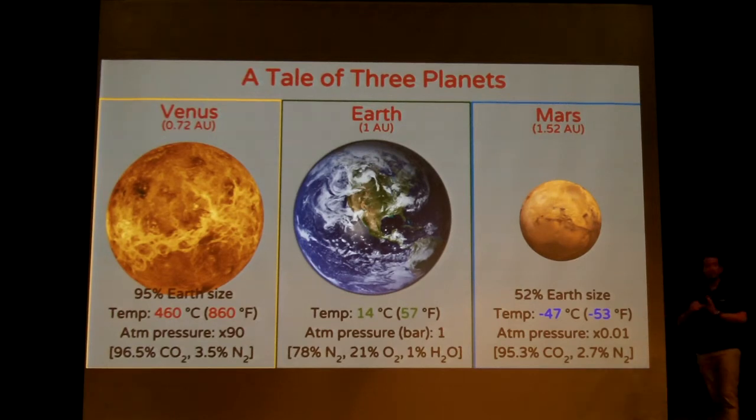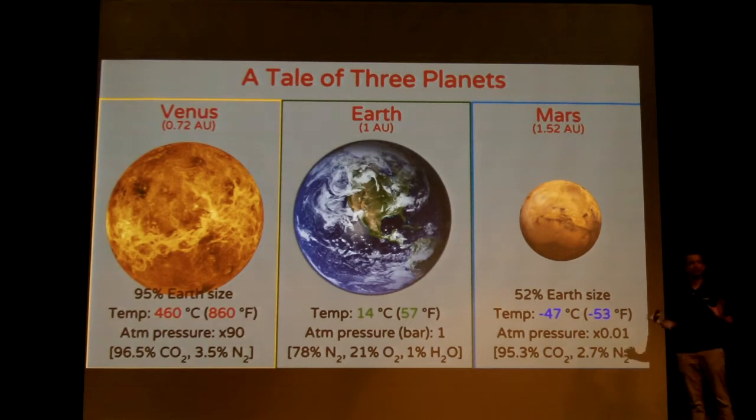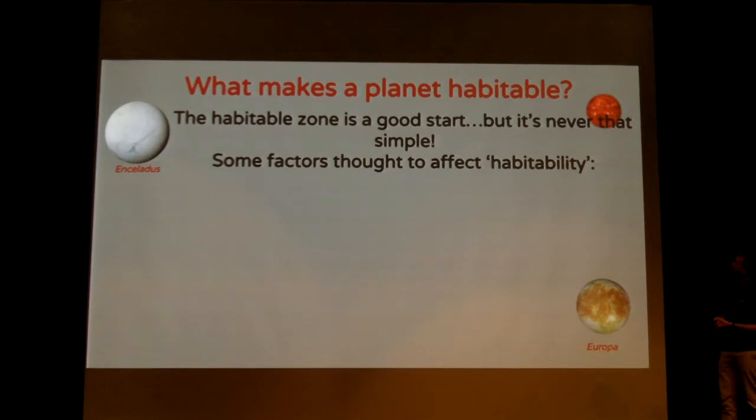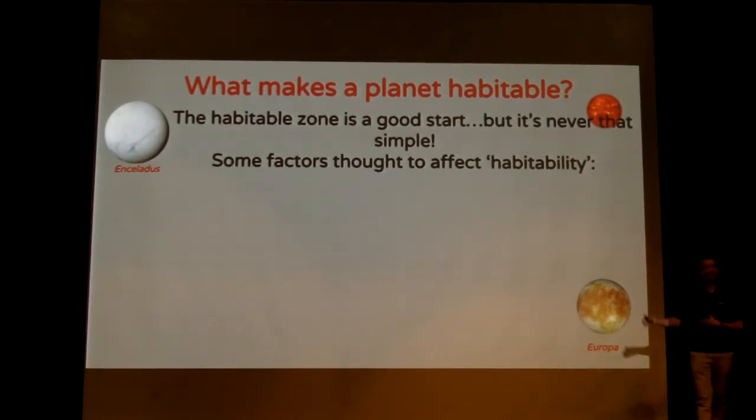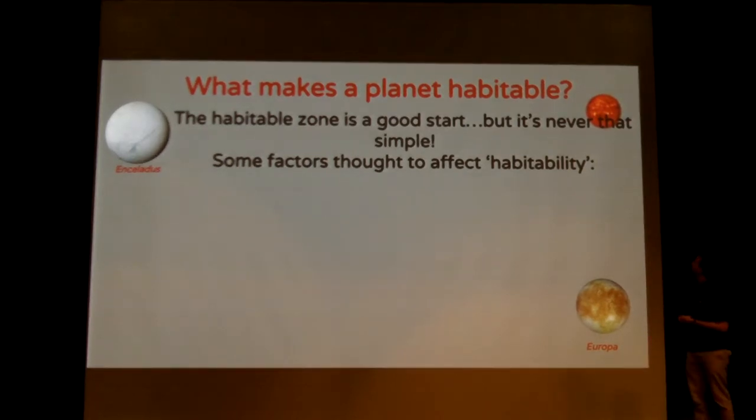So whilst the habitable zone is an interesting astronomical concept, it has a lot of problems as well. We think there's actually a lot of other factors in play, not just the amount of light that it's receiving. It's very, very important, of course. But it's never really as simple as just looking at that. It's never really as simple as that. There's lots of other factors that we think affect habitability, too.